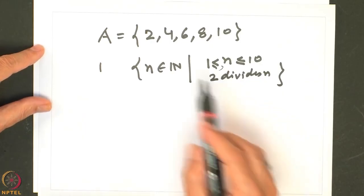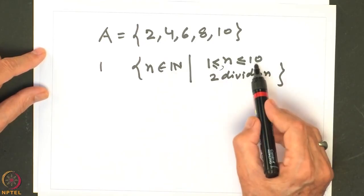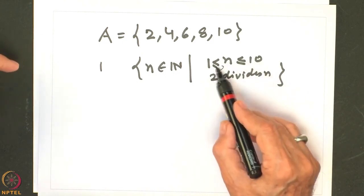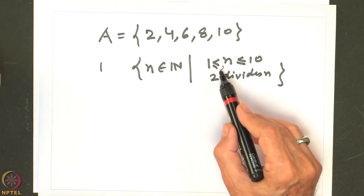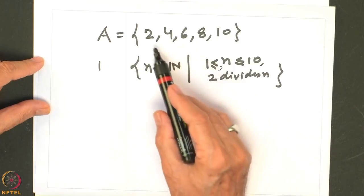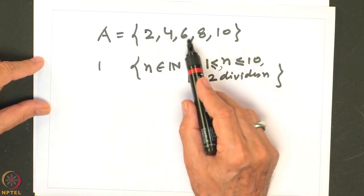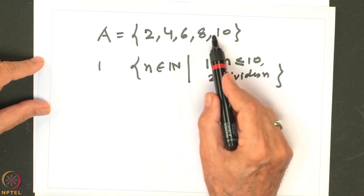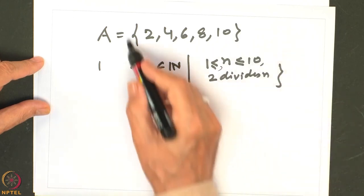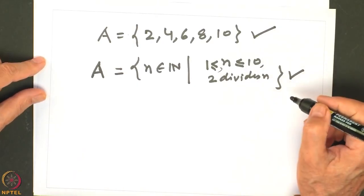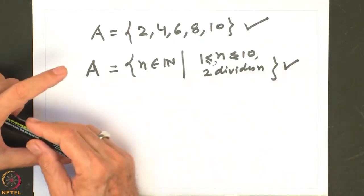We consider all numbers from 1 to 10 and check which are divisible by 2: 2 is, 4 is, 5 is not, 7 is not, 6 is, 8 is, 9 is not, 10 is. So A = {2, 4, 6, 8, 10} by the rule method as well. This is the explicit way of writing the set, and that is writing by a rule — two ways of describing a set.